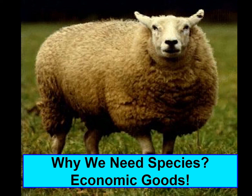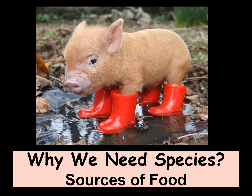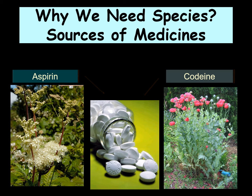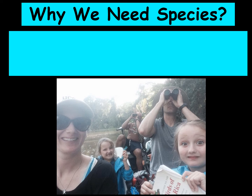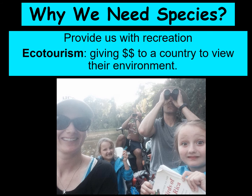We also need species for economic goods. Many animal species are raised for food. We also get a lot of medicines from plants in nature — for example, many painkillers come from the opium poppy. Another economic use is ecotourism, where people travel to different destinations to see local species. For example, many people go to Costa Rica and pay entrance fees to national parks hoping to see sloths, monkeys, and the many bird species in that beautiful country.